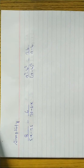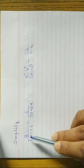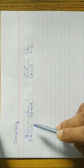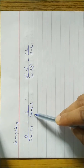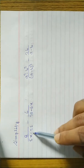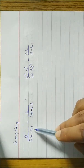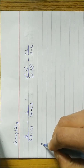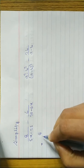Learn to simplify rational expressions having different denominators. Here we have the question: 8 by 5x minus 25, minus 6 by 30 minus 6x. You can see the denominators are different. Let's get started.